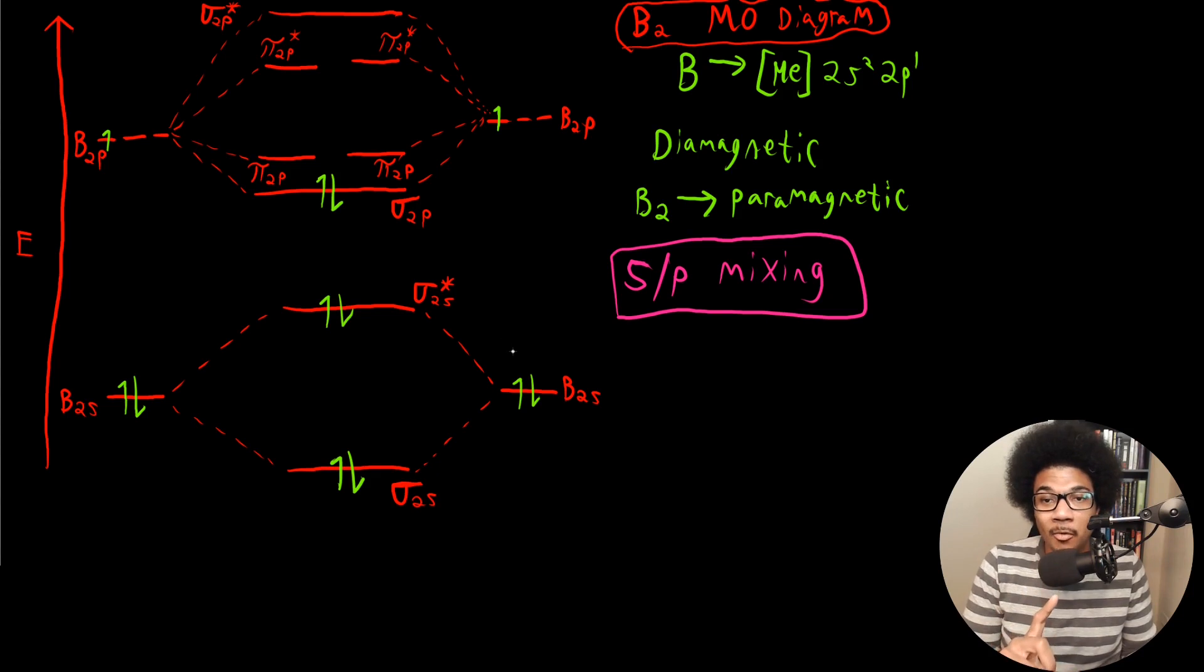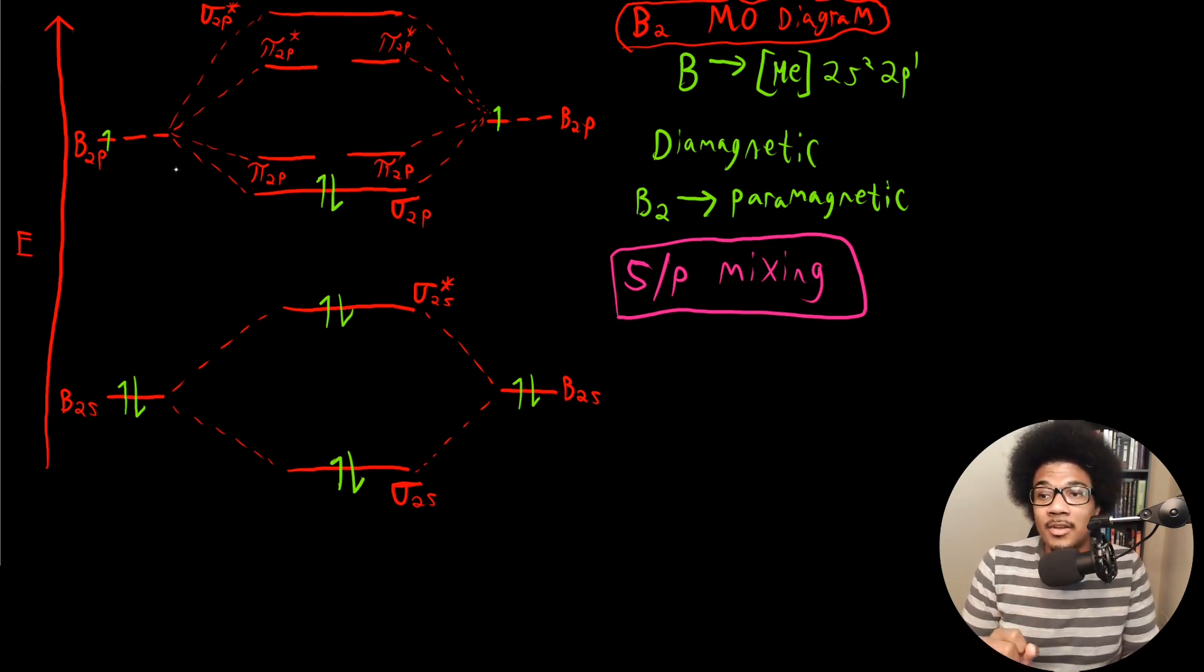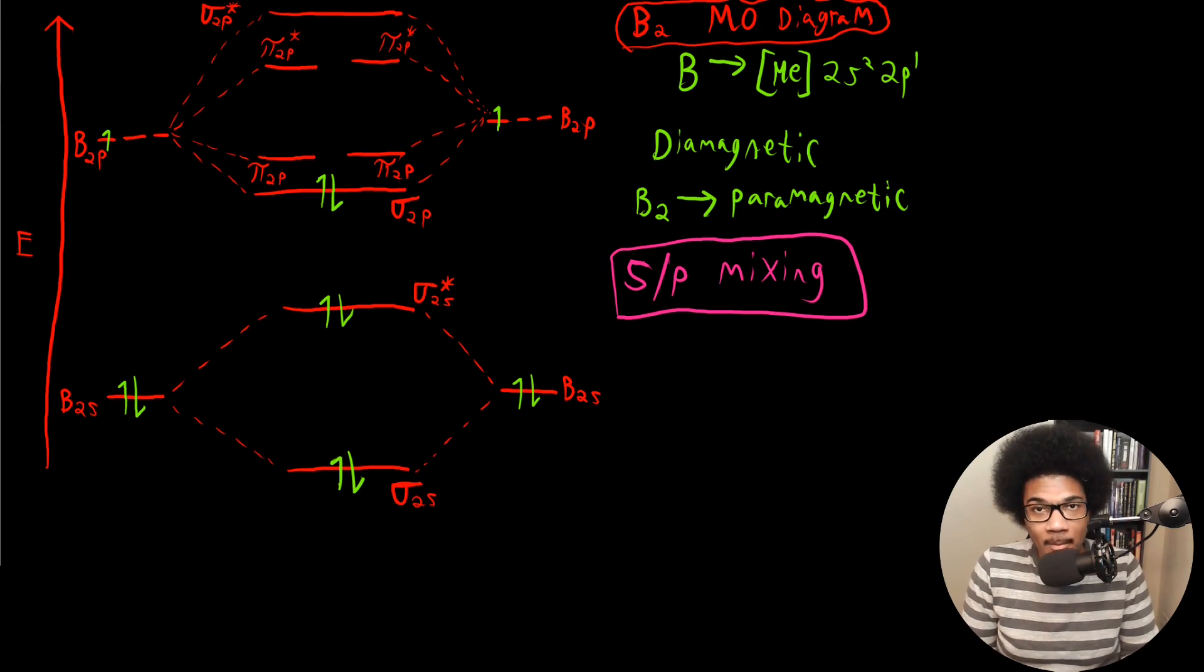Which means that the S orbitals actually mix a little bit with the P orbitals. So it's not just a clean, here's the MOs from the S orbital, here's the MOs from the P orbitals. There's actually a little bit of mixing. Lucky for us, the diagram doesn't change that much. So you would think if there's SP mixing, maybe there's different lines going all over the place on the MO diagram, but not so.